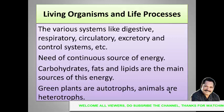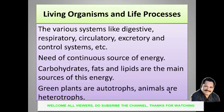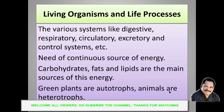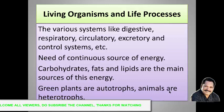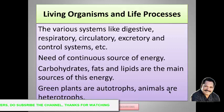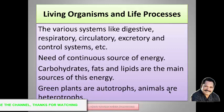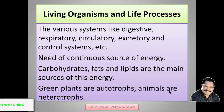Living organisms and life processes: we know the difference between living and non-living, studied in previous standards. In a living organism, various systems work together to perform the functions of the body — systems like the digestive system, respiratory system, circulatory system, excretory system, and nervous system. These systems work together with coordination to perform the body's functions, and for this, our body needs energy.